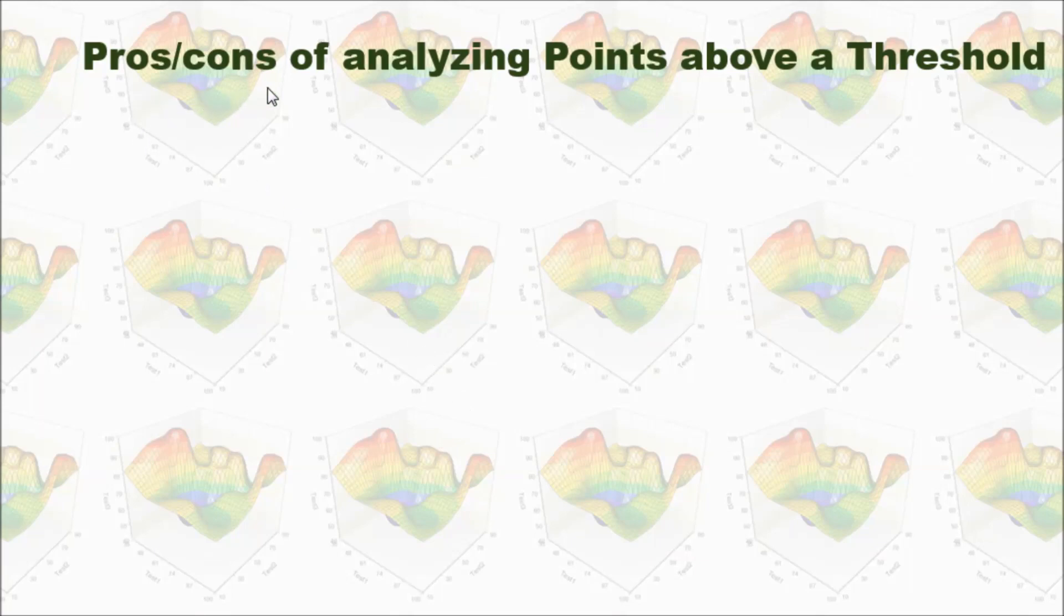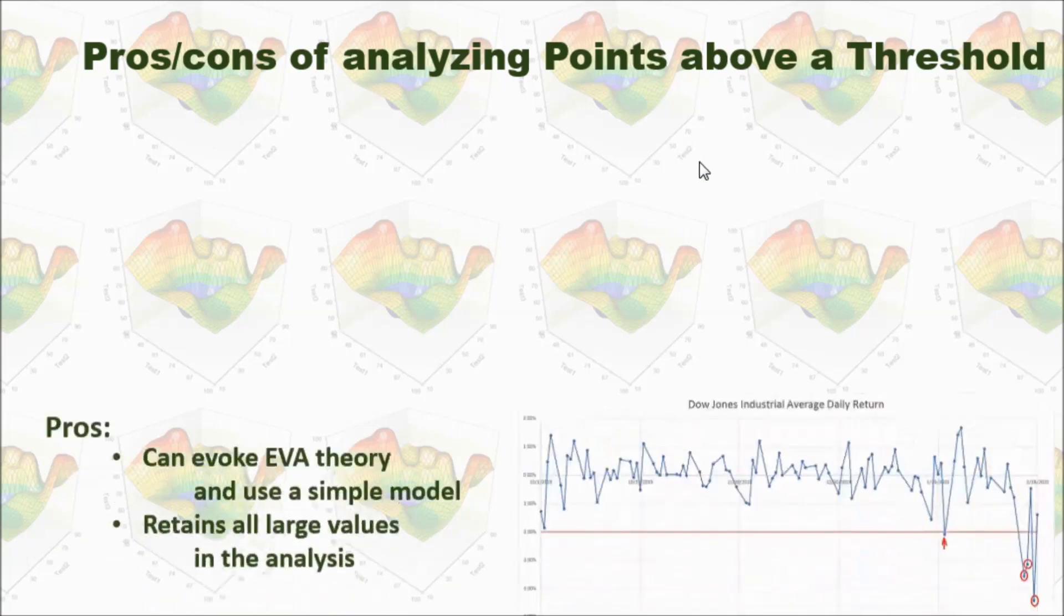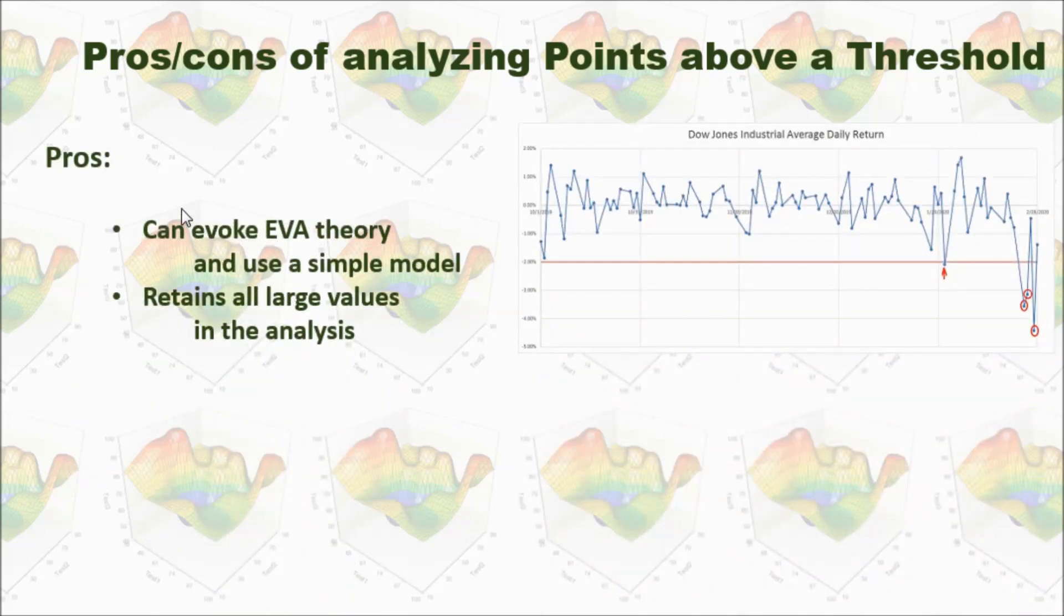So what are the pros and cons of analyzing points above the thresholds? Same with block maximum, it can evoke EVA theory and use a simple model. And it will return all large values in the analysis. For example, if we set up the threshold as negative 2%, you can see we will pick up all the large values in this analysis.